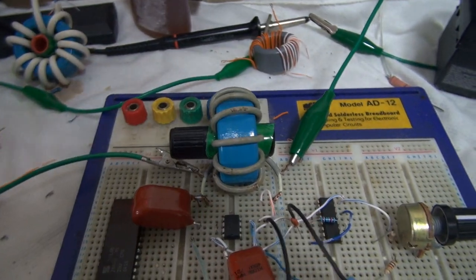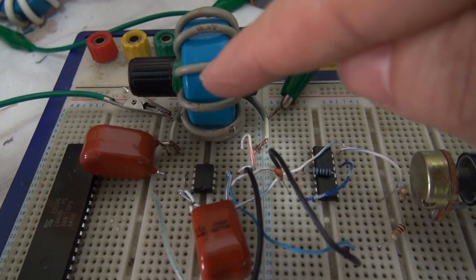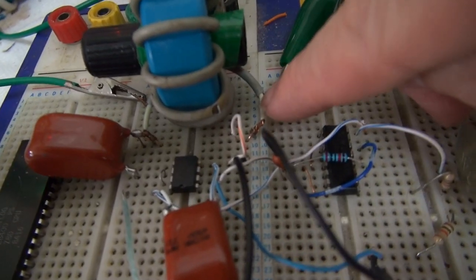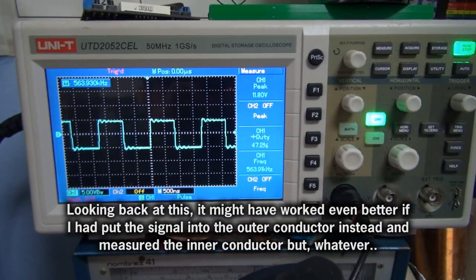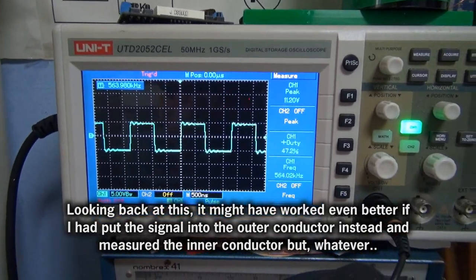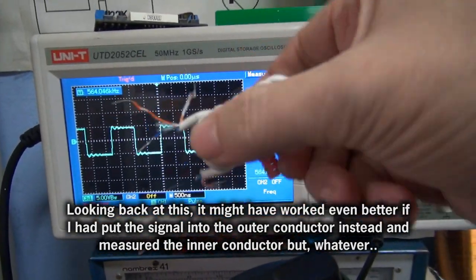And here's a similar way. This time I've used some screen cable. I'm putting the signal into the inner conductor, and we're measuring what's coming out of the outer conductor, and yeah. I mean, yeah. Works about as good as this one did.